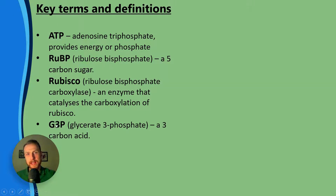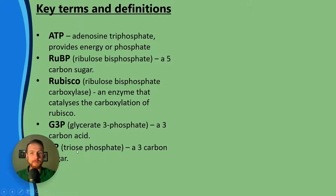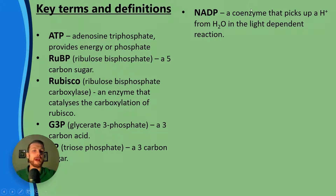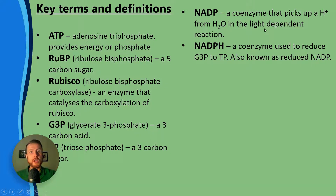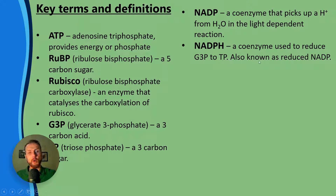Next, we have G3P, also known as glycerate-3-phosphate. That's a three carbon acid. We then have triose phosphate, TP, which is a three carbon sugar. We have NADP, that's a coenzyme that picks up protons from water in the light-dependent reaction. Once it's picked up the protons, it will become reduced and it's therefore known as reduced NADP or NADPH. That's a coenzyme that's used to reduce the G3P, the glycerate-3-phosphate, to the triose phosphate, the TP.